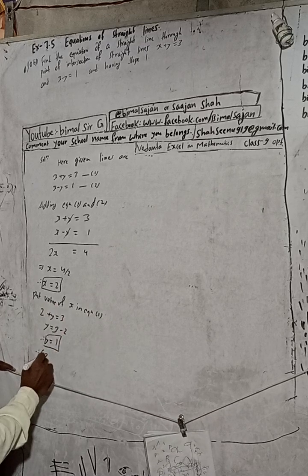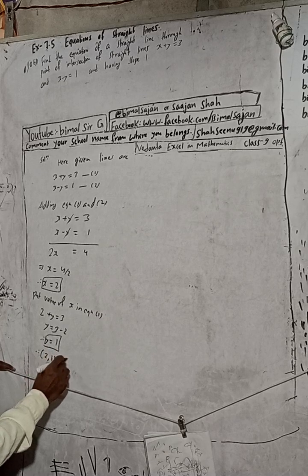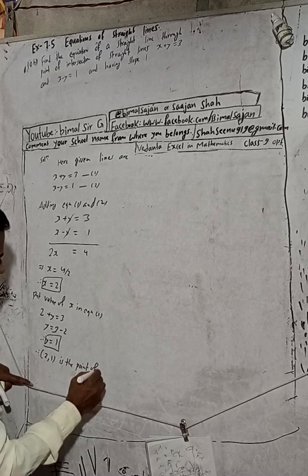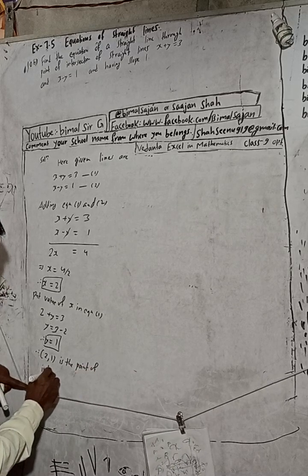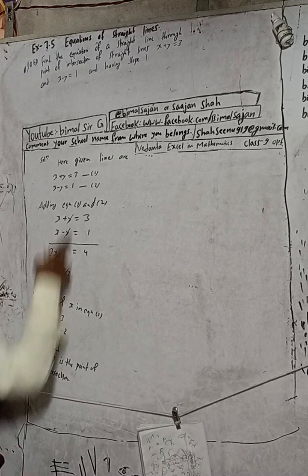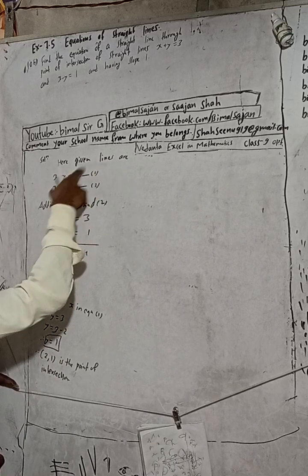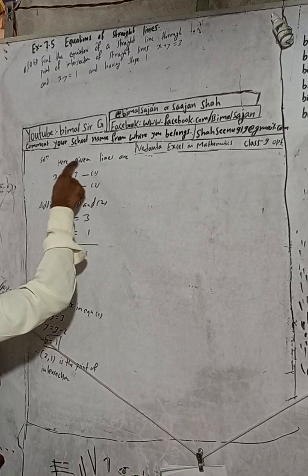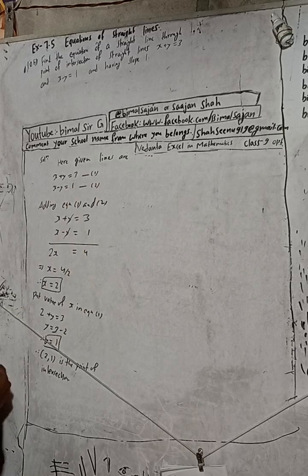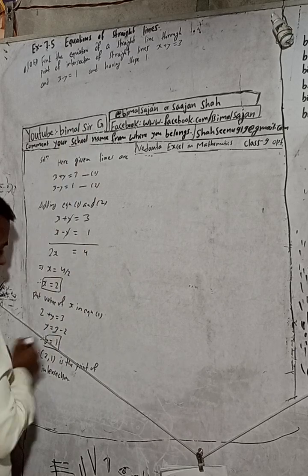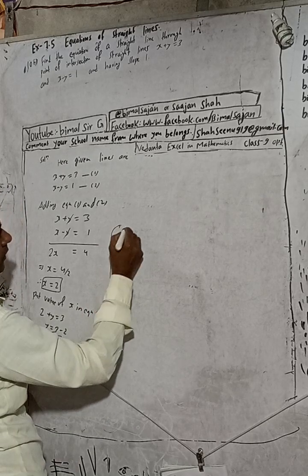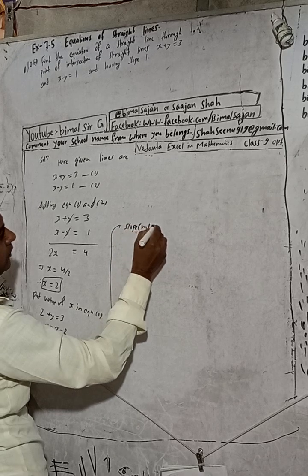Therefore the point of intersection is (2, 1). This is the point of intersection of line 1 and line 2. The slope is also given as having a slope of 1, so slope m equals 1.